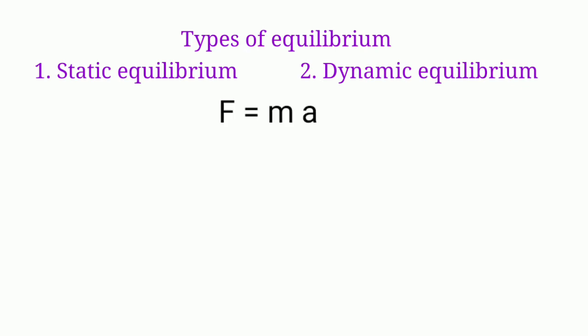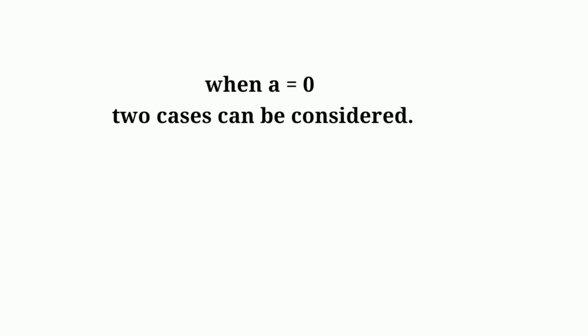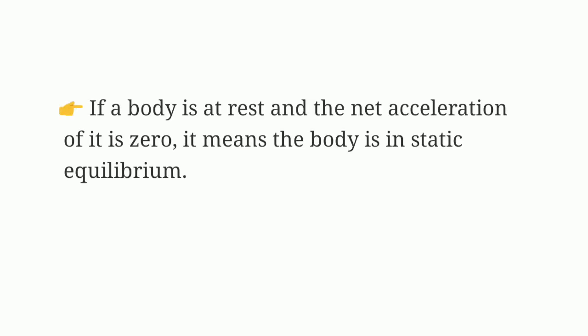From Newton's second law of motion, F equals ma, where F is the external force, m is the mass, and a is the acceleration. If the acceleration of a body is zero, then the net external force on it is also zero — F equals zero. A body is at rest when no external force acts on it. If a body is at rest and no disturbance causes it to move, that condition is called static equilibrium.